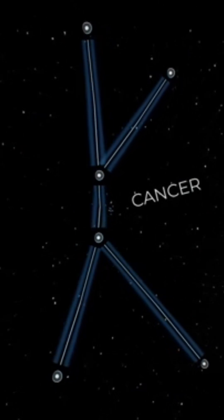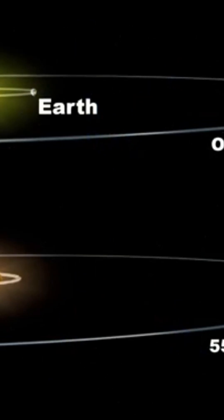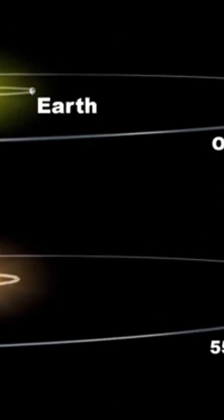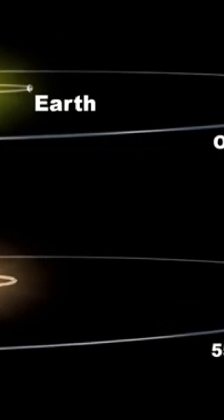This double star, some 40 light years from Earth, is composed of a yellow dwarf similar to our Sun and a red dwarf.